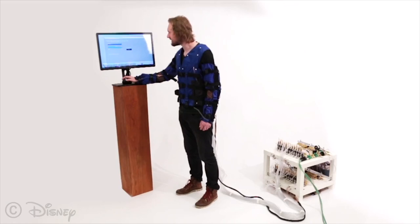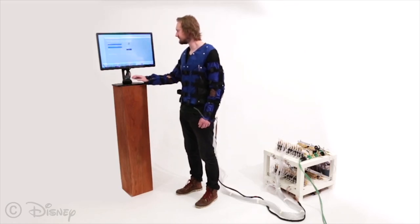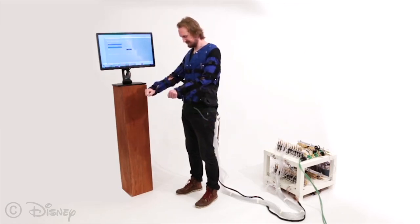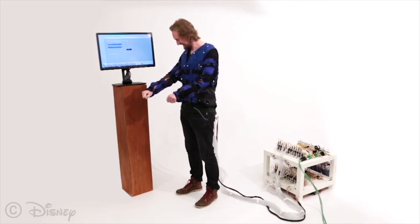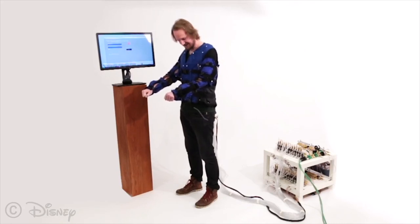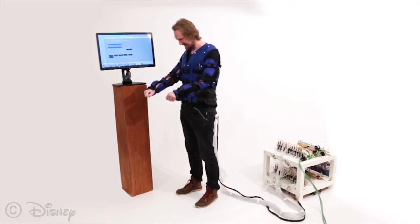The Force Jacket is a novel haptic wearable system that provides precisely directed force and high-frequency vibrations against the upper body in correspondence with visual media.